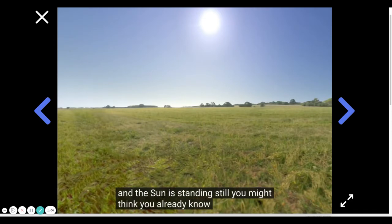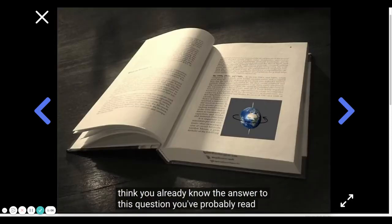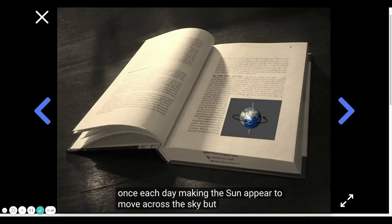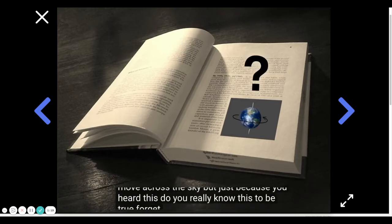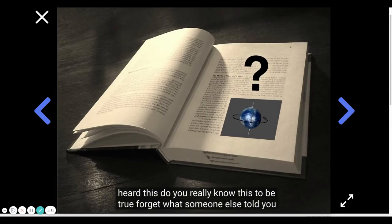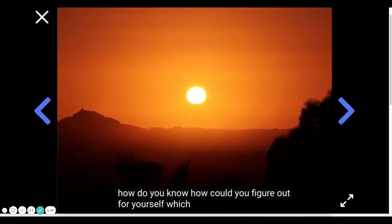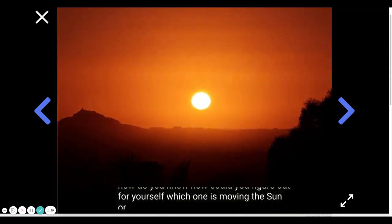You might think you already know the answer to this question. You've probably read in a textbook or heard your teacher say, the earth spins or rotates around its axis once each day, making the sun appear to move across the sky. But just because you heard this, do you really know this to be true? Forget what someone else told you. The real question in science is always, how do you know? How could you figure out for yourself which one is moving, the sun or the earth?